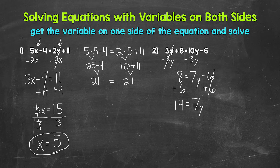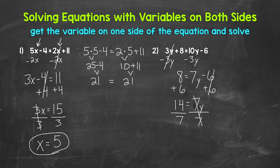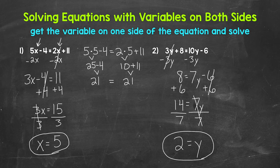So now we have 7y equals 14 — 7 times y equals 14. We need the inverse operation. The inverse operation of multiplication is division, so divide both sides by 7. On the right side, multiplying by 7 and dividing by 7 cancel each other out, so y is now isolated. On the left side, 14 divided by 7 gives us 2. So y equals 2. That's our solution.